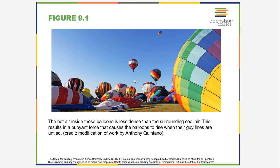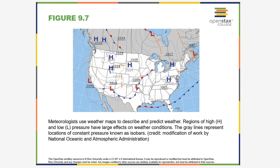Atmospheric pressure also comes into play with areas of high pressure and low pressure, which can cause weather patterns. Air will move from an area of high pressure to an area of low pressure, which can cause wind and storms. These regional pressure differences are a major factor in weather.